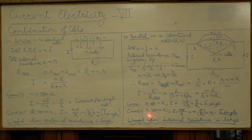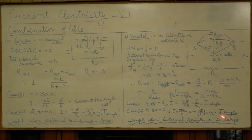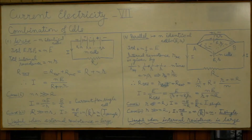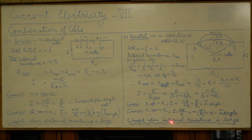Coming to case 2: when internal resistance is very large, we can neglect nR, and the expression for current becomes i = ne/r, which is n times e/r. Here e/r is the current from a single cell, so the combination provides n times the current from a single cell. Hence, in order to draw large current from a parallel combination, we should use it only when the cells have a large value of internal resistance.